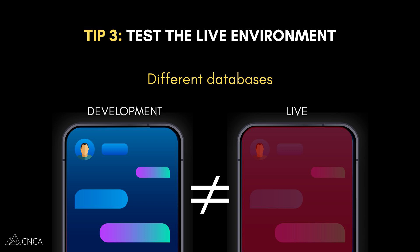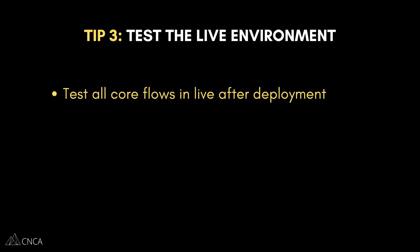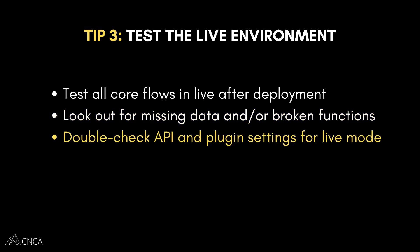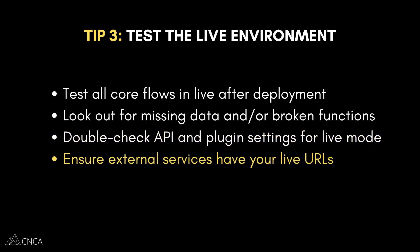In Bubble, you have two separate databases — one for the development environment and one for the live environment. So go to your live version URLs and walk through your entire core experience there. Look out for empty repeating groups or tables, missing images, broken maps, or any API functions that just aren't working. Check that all your API connections and plugins are set up correctly, especially if they require different live credentials. And don't forget to update any details on those external accounts too, such as live webhook URLs. This is the one that sneaks up on people because it doesn't present itself until you're in live mode. Don't skip it.